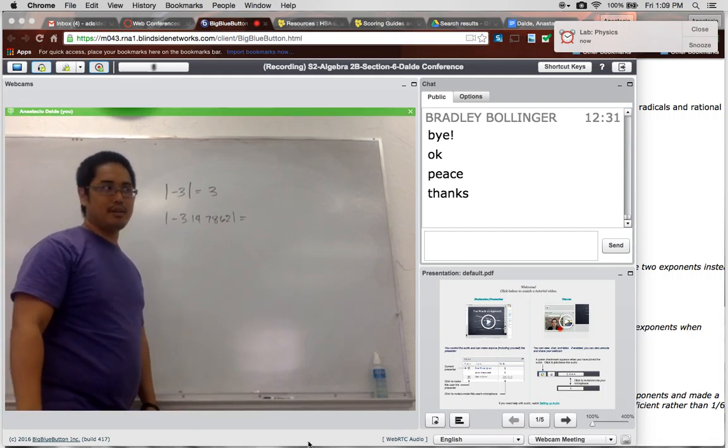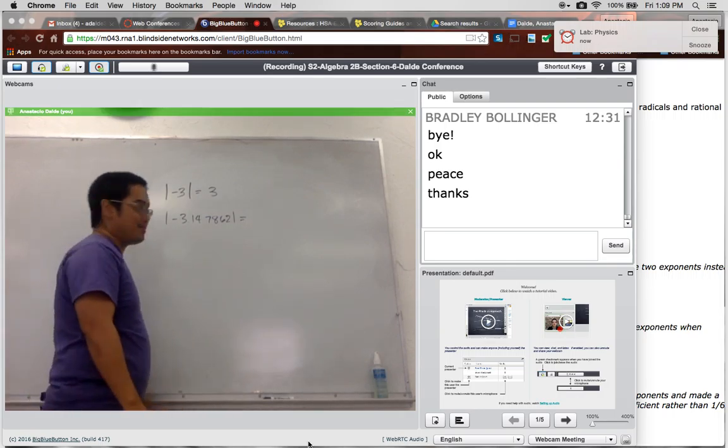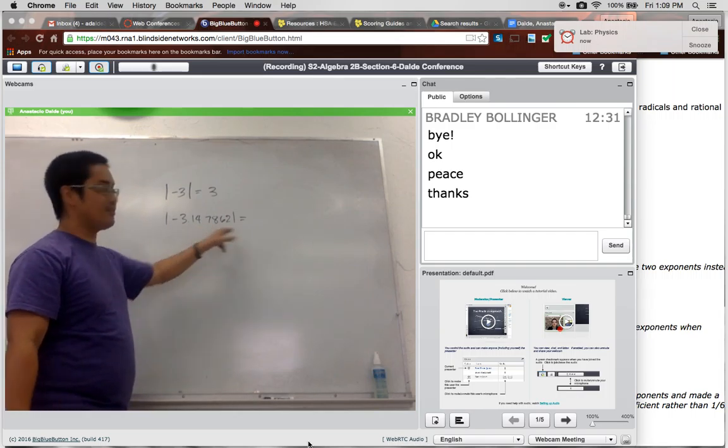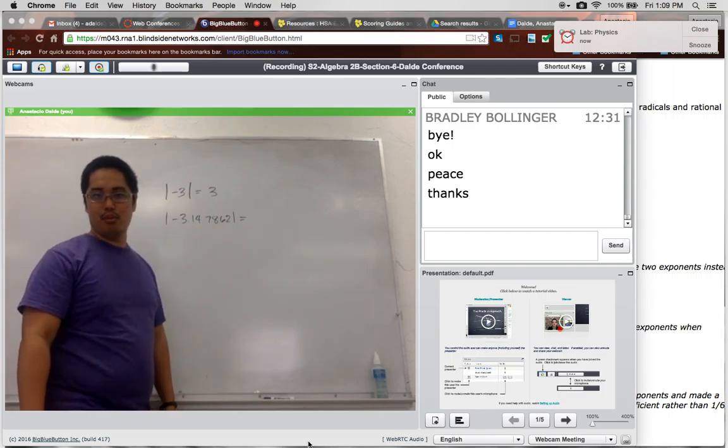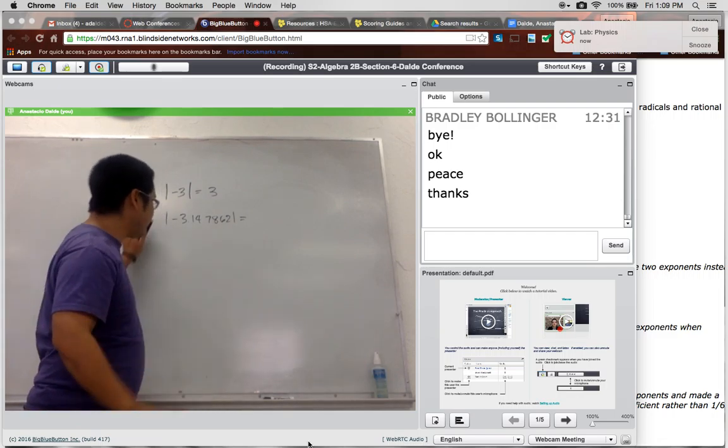Or maybe they do have nothing to do with each other. They have nothing to do with each other. Because this is just positive 3.147862. Blah, blah, blah. Got it? Okay. But the absolute value can be a tricky thing.